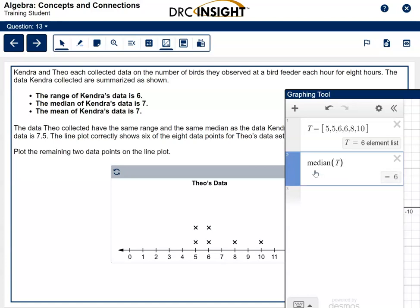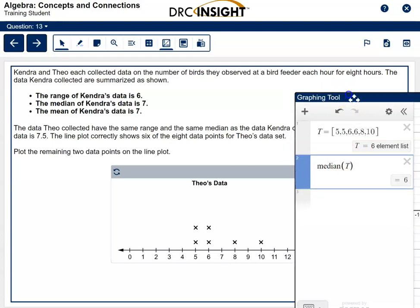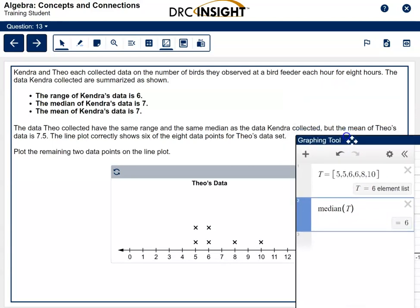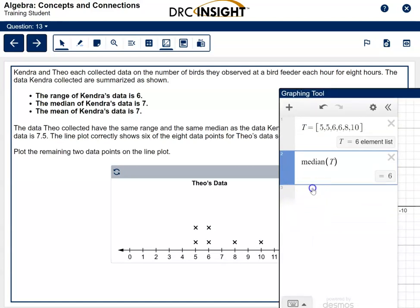We know he has the same median as Kendra. So what I want you to do is type median and put parentheses and put a capital T inside. This will tell you his median. And right now, his median is not right. We need it to be a 7, just like Kendra's. And he's supposed to have the same range and the same median. But we need his mean, M-E-A-N. So go ahead and put mean, and let's put T. We need his mean to be 7.5. So we're going to have to add two more points to this set and make both of these numbers work. We need the median to be 7, and we need the mean to be 7.5.